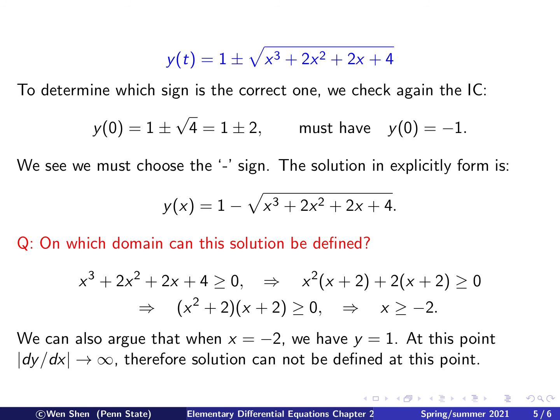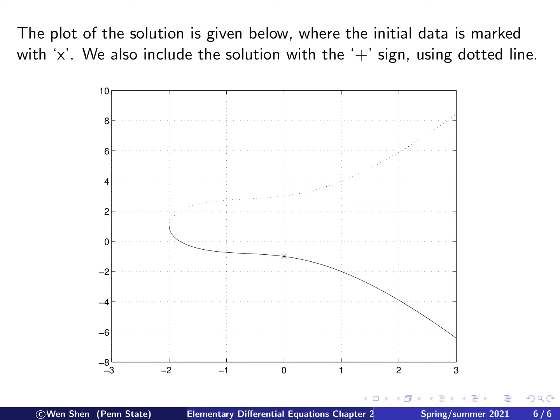Therefore, the solution cannot be defined at this point. And since your initial condition is given at x equals 0, then you cannot extend your solution to the left, passing the point negative 2. Therefore, x has to be bigger than negative 2.